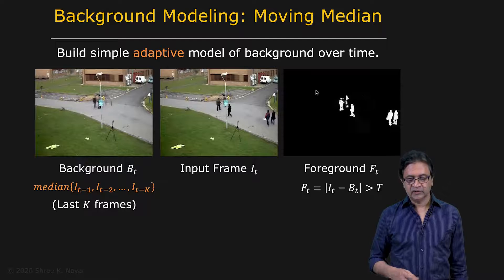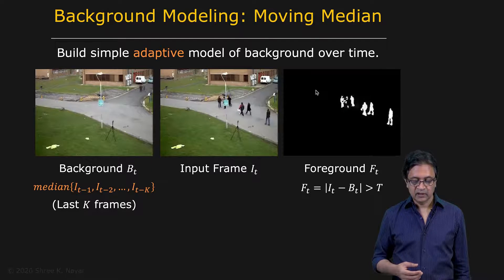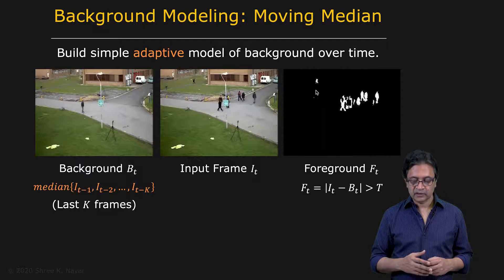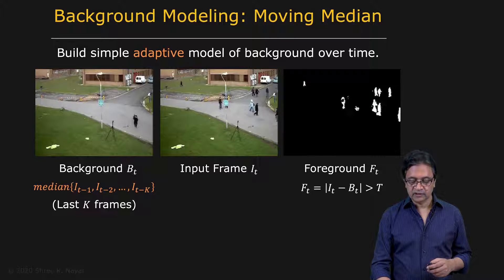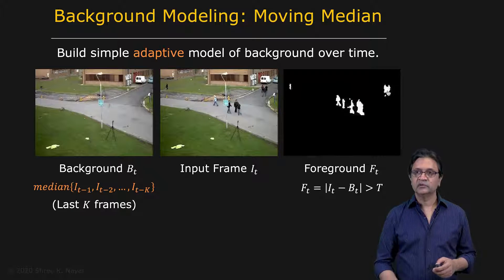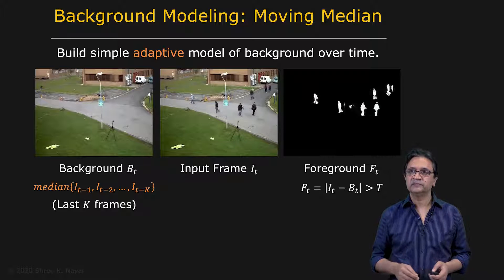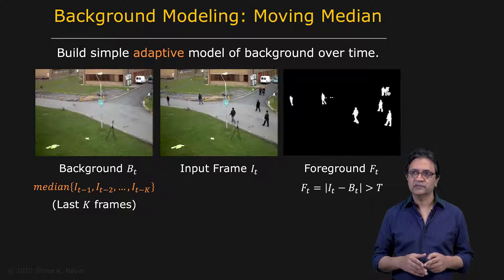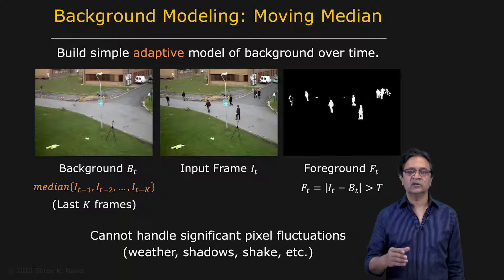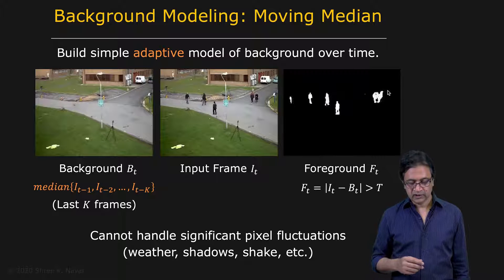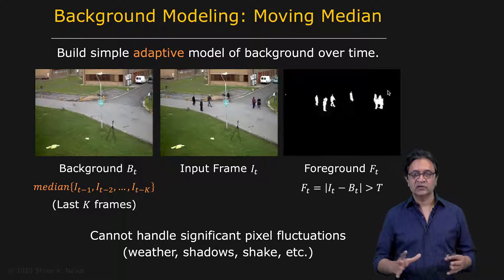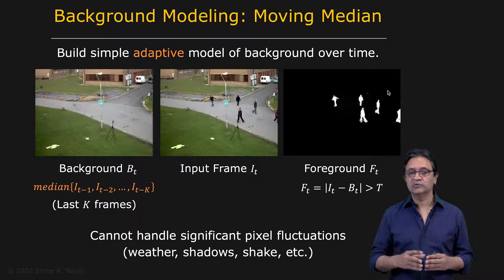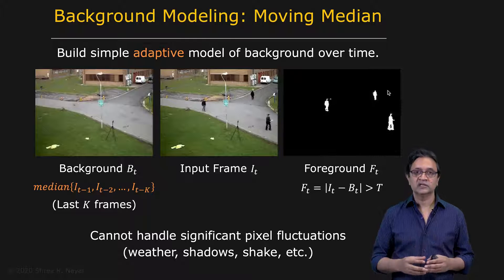In a more benign example without swaying leaves, where people have distinct clothing very different from the background, the results look fairly good — there is a little confusion, but by and large things work reasonably well. This is the simplest version of background subtraction, easy to implement. However, it cannot deal with all the uninteresting changes we wanted to ignore — weather effects like rain and snow, shadows attached to objects, or camera shake. We need to look at how to solve those problems by creating a more powerful model for intensity variation at each pixel.